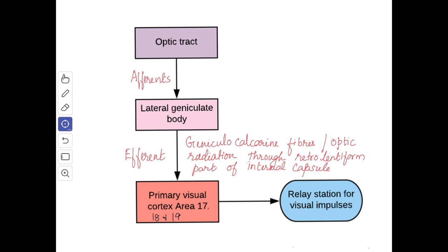The afferents of the lateral geniculate body are the lateral root of the optic tract, which consists of most of the retinal fibers of both eyes — the temporal fibers of the same side and the nasal fibers of the opposite side. The efferents are the geniculocalcarine fibers, which form the optic radiation and pass through the retrolentiform part of the internal capsule to the visual cortex of the occipital lobe, areas 17, 18, and 19. Its function is to act as the last relay station on the visual pathway.